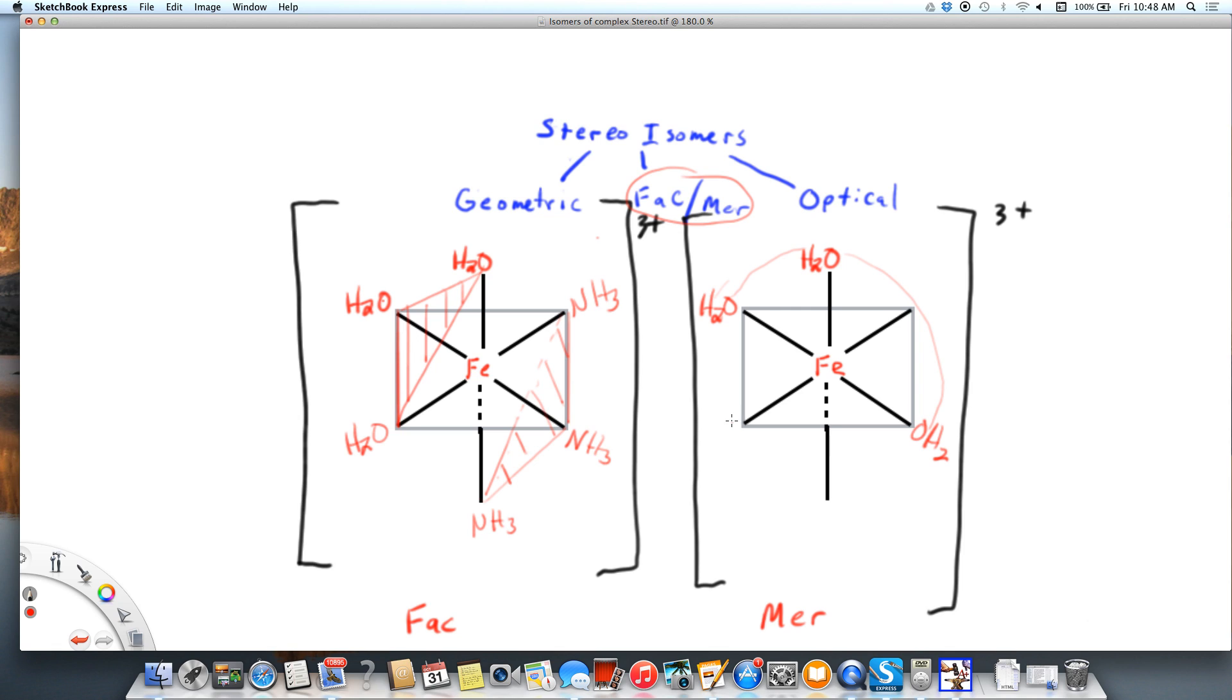If I put my ammonia here and here, I have two ammonias that are in the cis position. And if I put the third one over here, you'll see that I have two across. So in order for the mer, I need two that are across from each other.